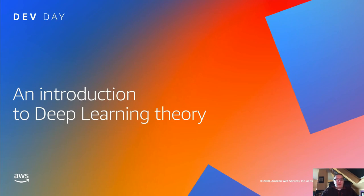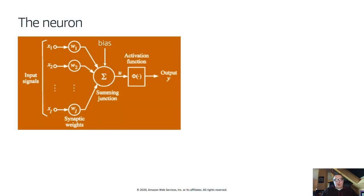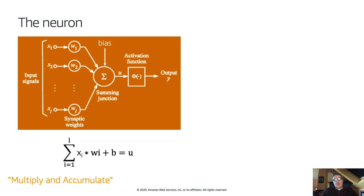Let's go with theory. First, we should explain what a neuron is. We're trying to mimic the biological neuron. Biological neurons have inputs that are assigned a weight, and if inputs are strong enough then the neuron fires. If inputs are not strong enough the neuron doesn't fire. So we're trying to mimic that using code. We have input signals x1, x2, etc. Each input has a weight w1, w2 and so on. Then we have a summing operation — multiply each input by its weight and add everything together. This is called multiply and accumulate.